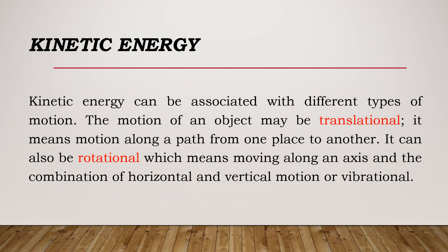Kinetic energy can be associated with different types of motion. The motion of an object may be translational, meaning motion along a path from one place to another. Example, cars on the highway, these are translational. And also, another type is rotational. Rotational moves along an axis and the combination of horizontal and vertical motion, or vibrational. Examples of rotational are the ferris wheel, because it goes around, or the electric fan, it spins. Or it could be a roller coaster. Because roller coaster has a combination of horizontal (sideways) and vertical (up and down). So roller coaster is best example of rotational.